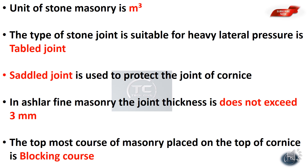The type of stone joint suitable for heavy lateral pressure is the table joint. The saddle joint is used to protect the joint of a cornice. For ashlar fine masonry, the joint thickness does not exceed 3mm.